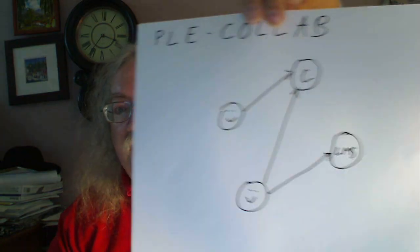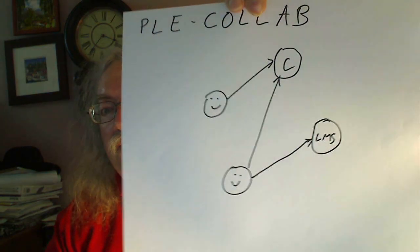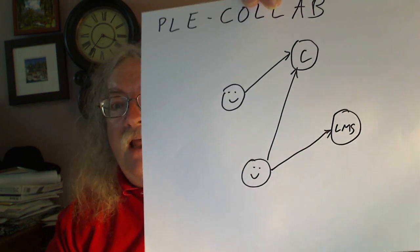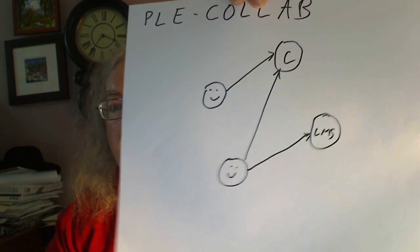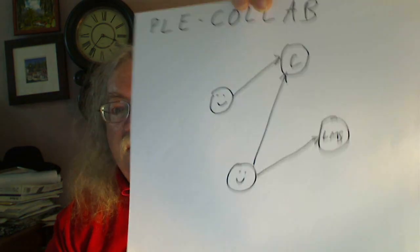In a Personal Learning Environment, what happens is you and your friend collaborate in some separate collaboration environment, separated from the LMS. You can still connect to the LMS, but you and any person in the world can collaborate. You choose your own place and your own application to collaborate in.